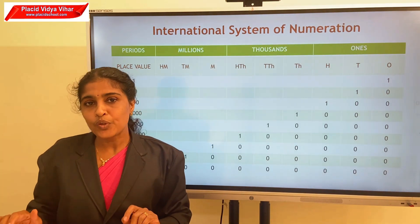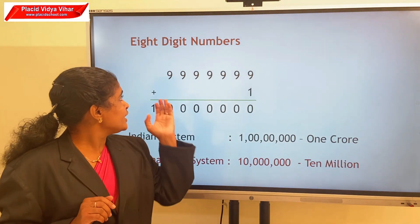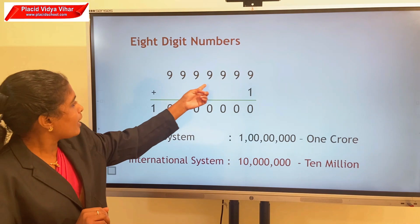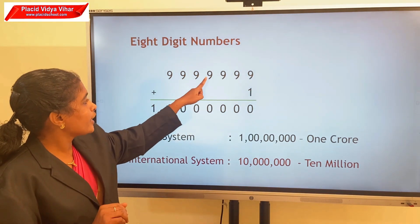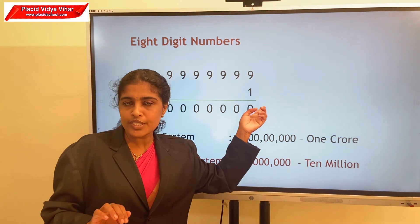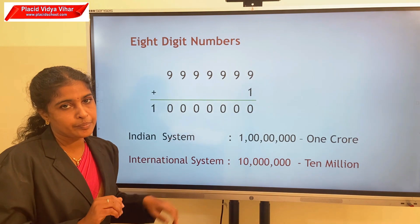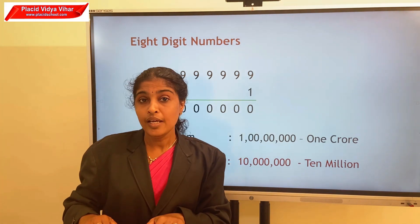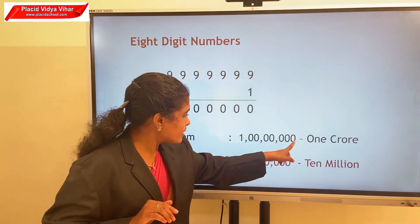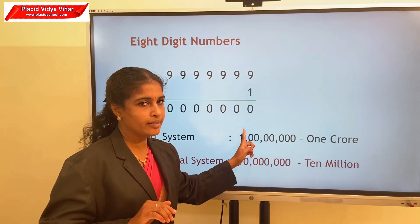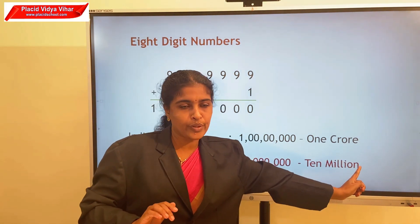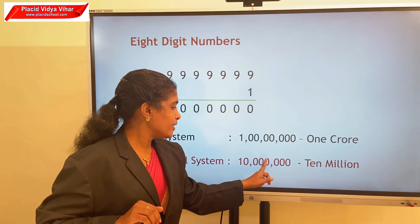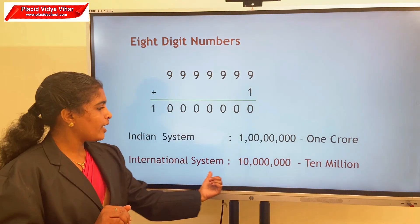To read large numbers, we put commas between each group. Next, we have 8-digit numbers. On adding one to the largest 7-digit number 99,99,999, we get the smallest 8-digit number. In the Indian system, this number can be written as one crore — that is the eighth place: ones, tens, hundreds, thousands, ten thousands, lakh, ten lakh, crore. In the international system, we put commas in groups of three, so it can be written as ten million.